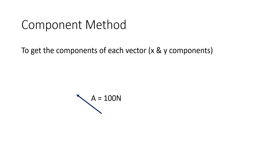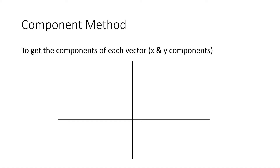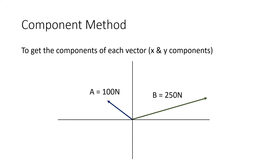Let's say we have a vector A with a magnitude of 100 N and the direction is north of west. And then we also have another vector, vector B, with a magnitude of 250 N, that is north of east. Our target is to get the x and y components of these two vectors. We'll place vectors A and B with a common initial point at the origin, or 0, 0.